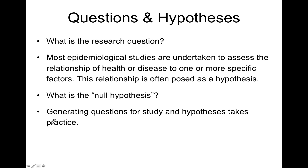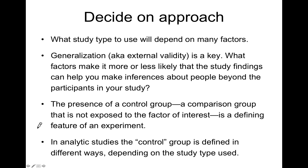If the null hypothesis is not true, it can be rejected. Generating questions for study and hypotheses takes practice, and one gets used to it over time. As one develops a study, one goes through a number of thoughts to figure out what the best type of study is to use. There are choices in study design regarding the selection of subjects that can make it more likely that results can be generalized to the larger population. Most studies will have a control group — a group that is either not exposed to a particular factor or not given a particular treatment — so that they serve as a comparison group.